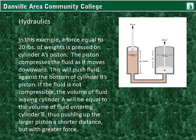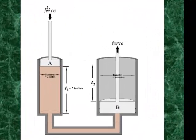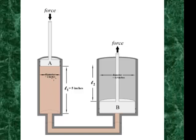In this example, a force equal to 20 pounds of weight is pressed on cylinder A's piston. The piston compresses the fluid as it moves downward. The fluid is shown in tan. This will push fluid against the bottom of cylinder B's piston. If the fluid is not compressible — that is, it cannot be smashed into a more dense liquid — the volume of fluid leaving cylinder A will equal the volume entering cylinder B, thus pushing the larger piston up a shorter distance but with a much greater force.